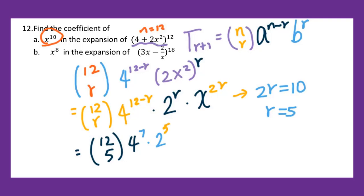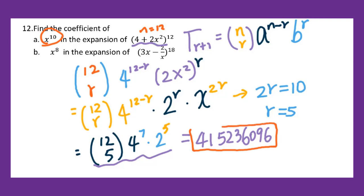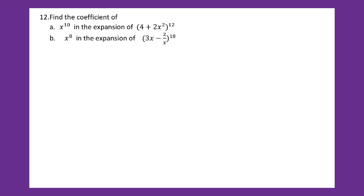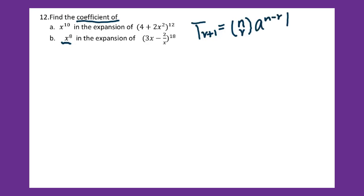We put all this into the calculator and we will get a very large coefficient. Let's go to part b: we need to figure out the coefficient of x to the eighth power. We still need to use the r plus 1th term formula: n taken r, a to the n minus r power, and b to the r power.